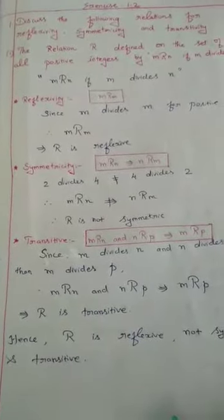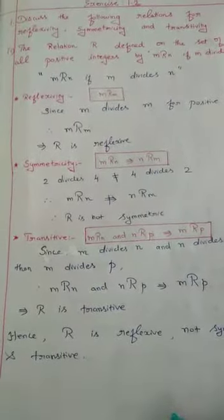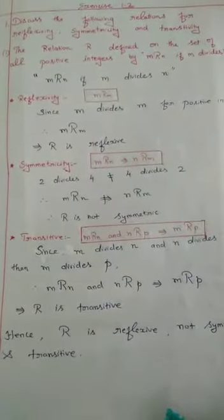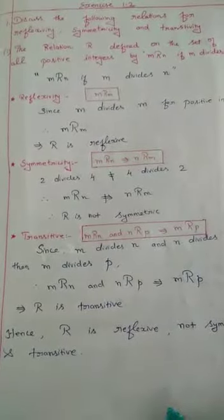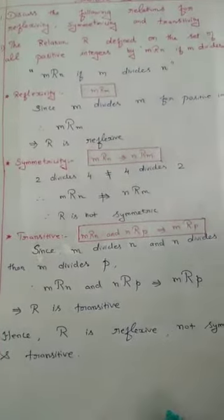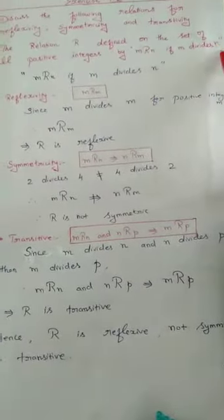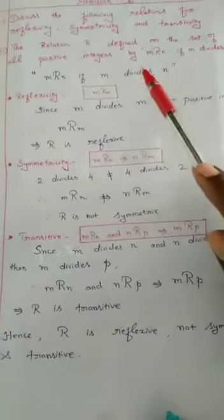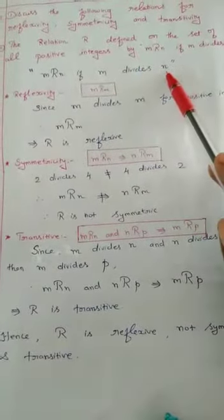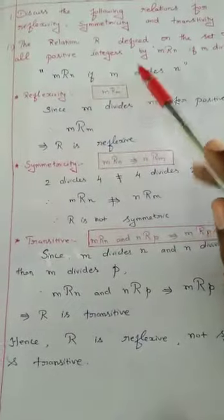First sum. Discuss the following relations for reflexivity, symmetricity and transitivity. First subdivision: the relation is defined on the set of all positive integers by the rule — M is related to N if M divides N. Write the rule here. If M divides N, then we can say M is related to N. This is the rule.